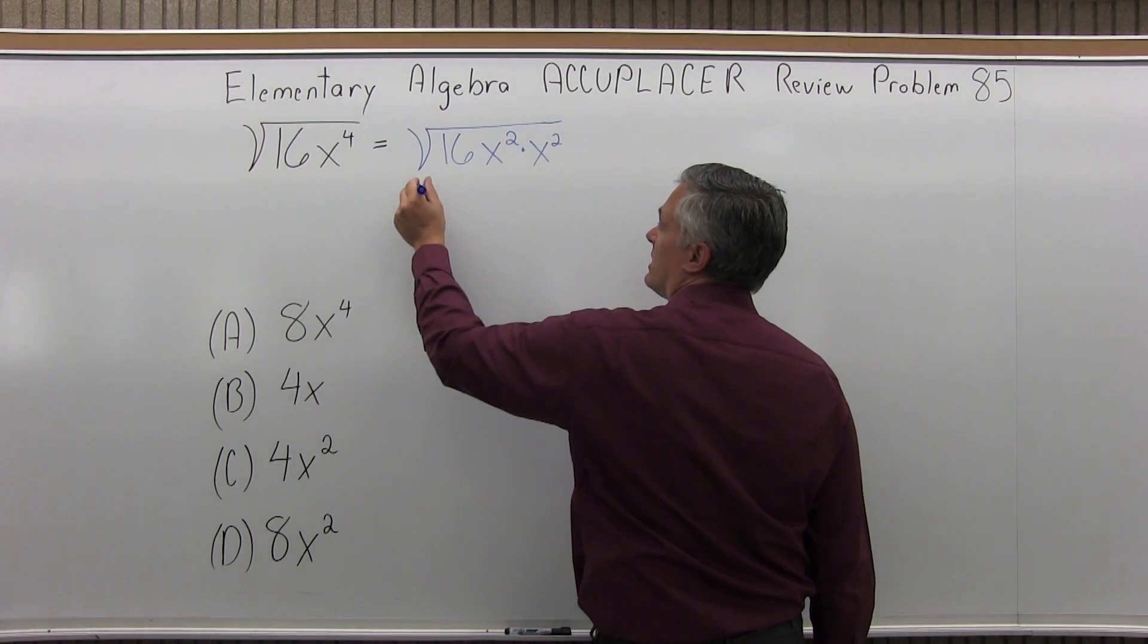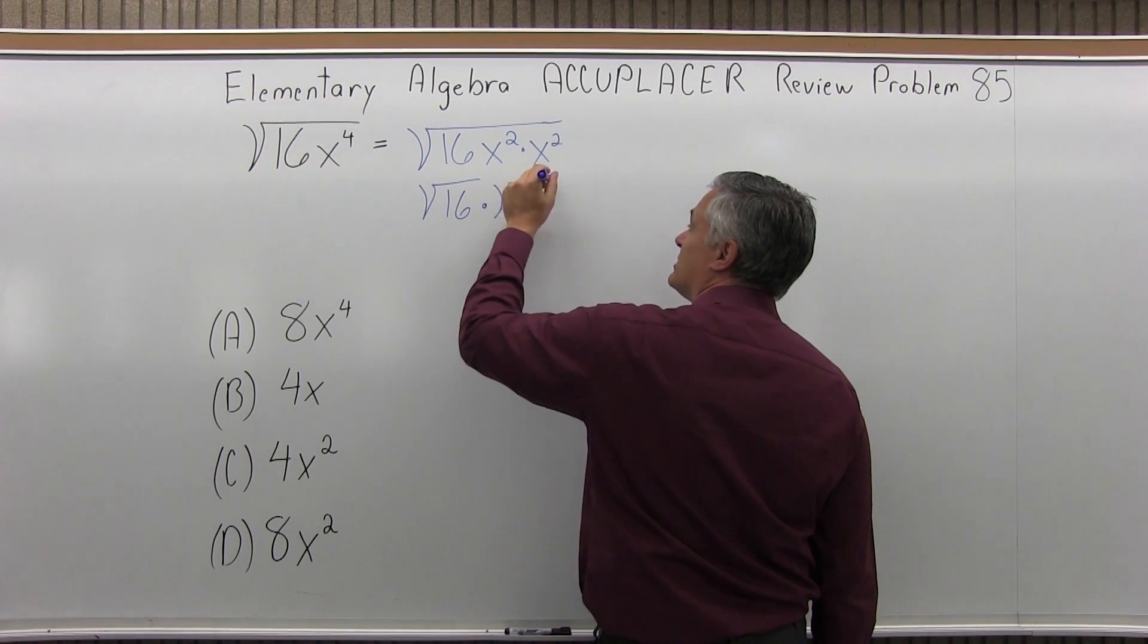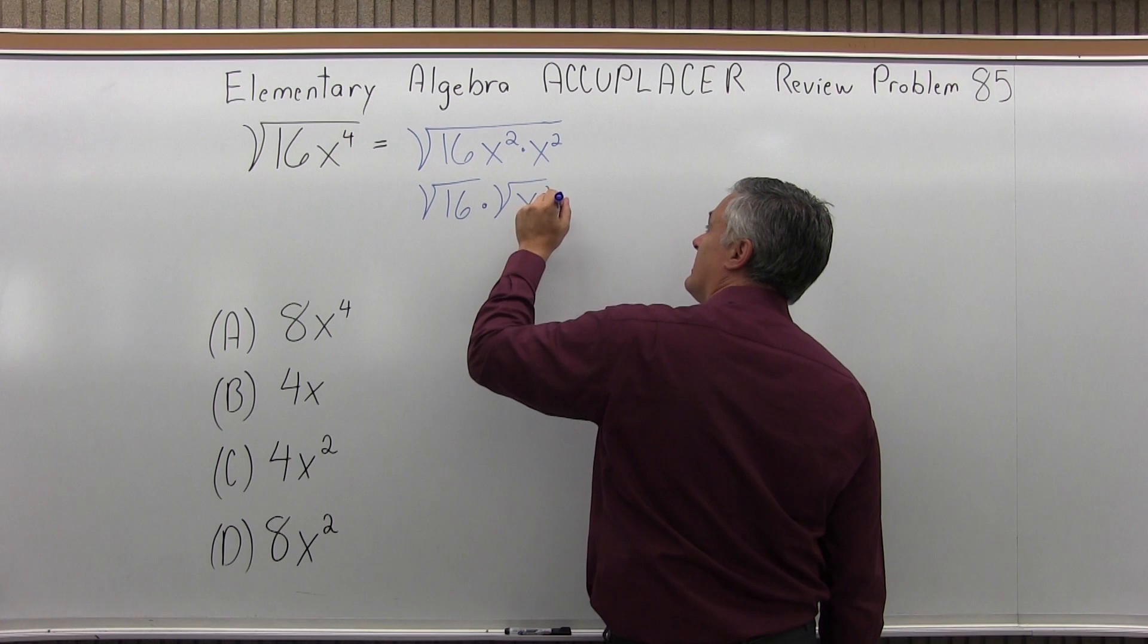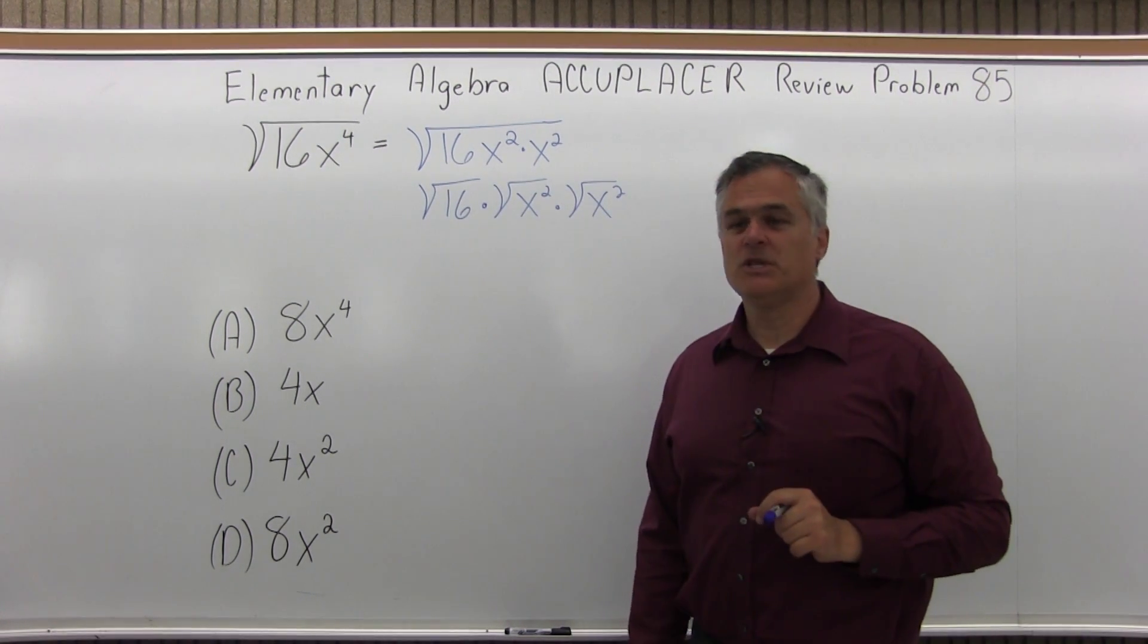And now instead of one big square root, let me write three separate smaller square roots. So square root of 16 times square root of x squared times square root of x squared again. I'm just breaking it up into smaller more manageable pieces.